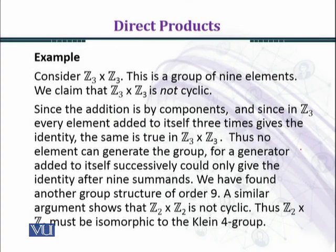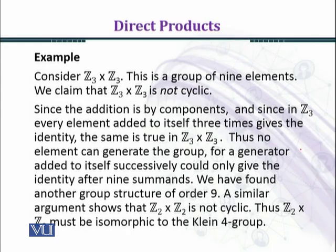Now we consider another example: Z₃ × Z₃. This group has nine elements: (0,0), (0,1), (0,2), (1,0), (1,1), (1,2), (2,0), (2,1), (2,2). We claim this group is not cyclic. The best way to prove this is to find the order of each element and show that no element has order nine.